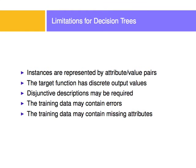Some of the limitations for decision trees is exactly that the instances are represented by attribute-value pairs. What happens if I want to invest money and I want to know the quantity of money — not whether I should invest or not, but actually the actual quantity, which is a continuous value?